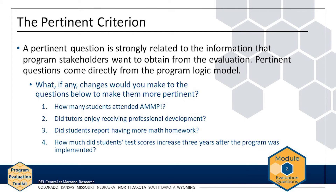Pertinent questions are strongly related to the information that program stakeholders and participants want to obtain from an evaluation. Here are the questions that the AMP evaluation team has drafted. Referring to the AMP logic model, what changes would you make to improve these questions so that they meet the pertinent criterion? For example, you might change question 3 to "Did students complete more math homework?" because simply asking students to self-report whether they received more homework might not be an accurate measure and therefore not be as meaningful to stakeholders. Think about the other questions, then look at how the AMP evaluation team makes their questions more pertinent.